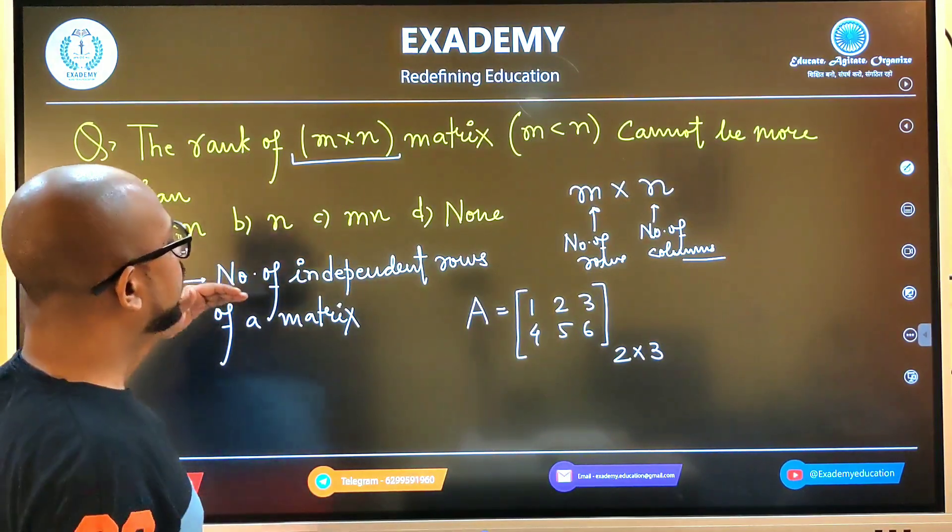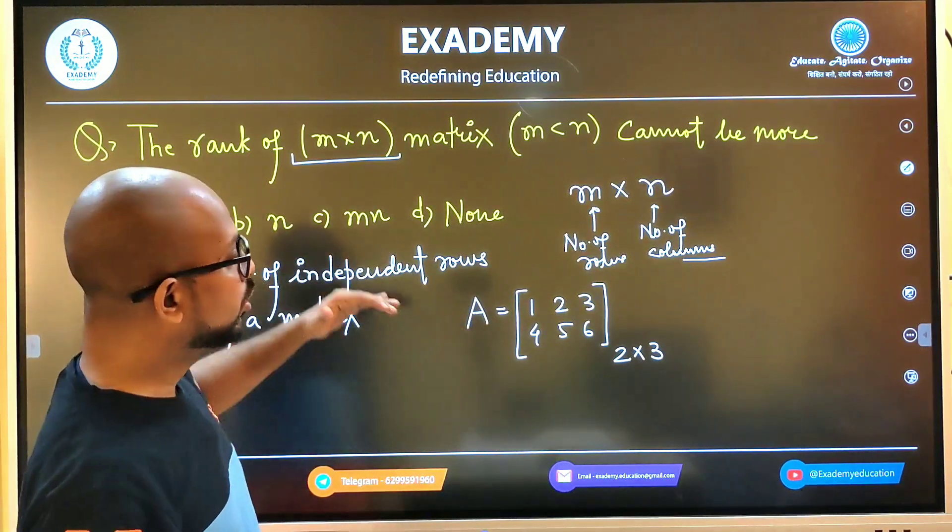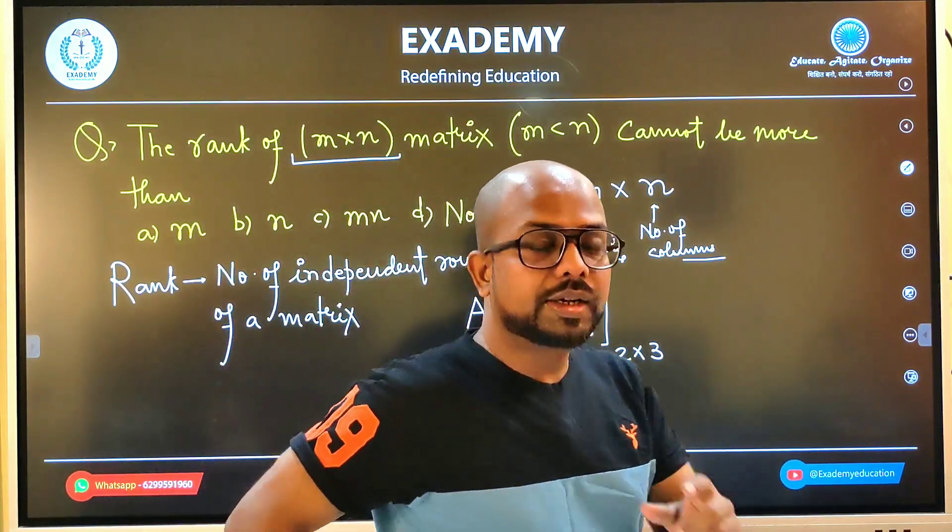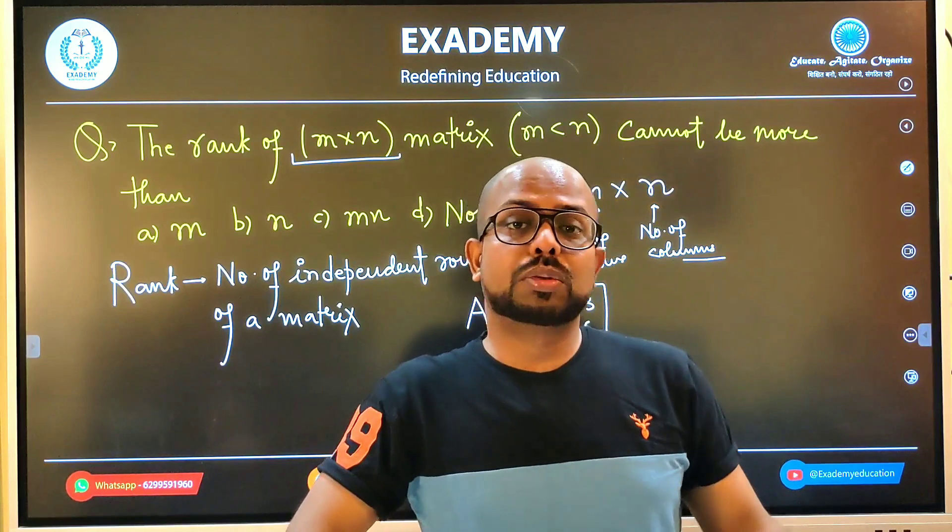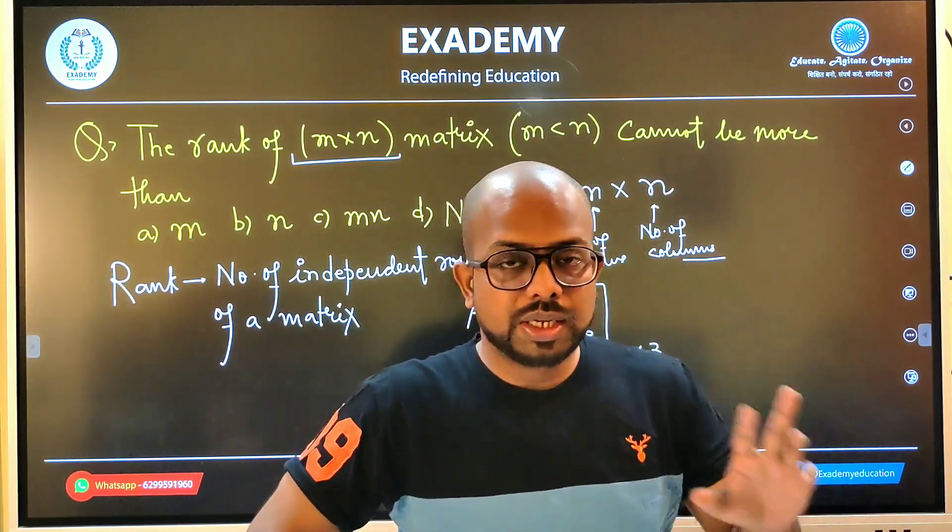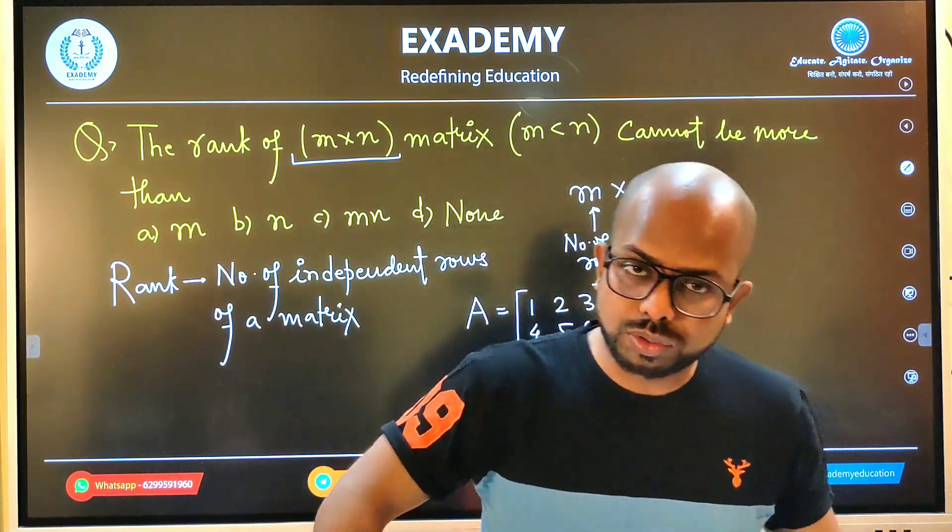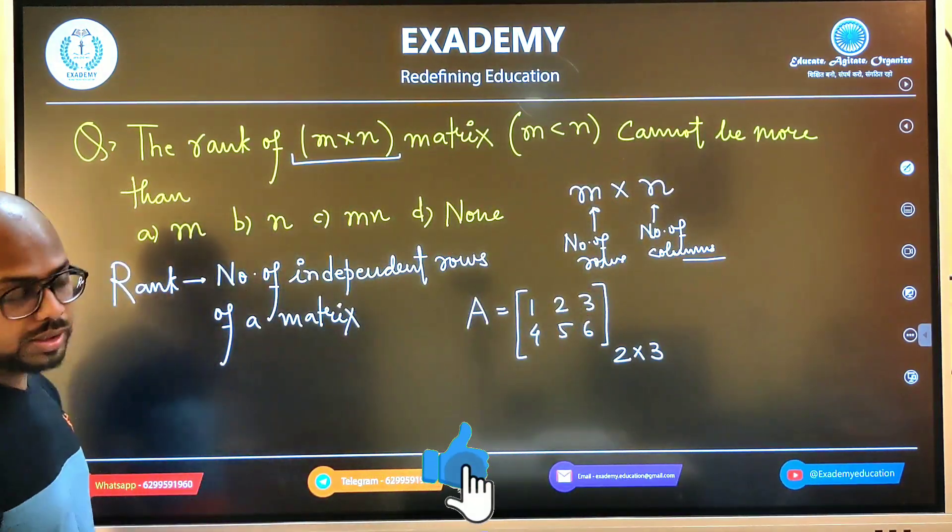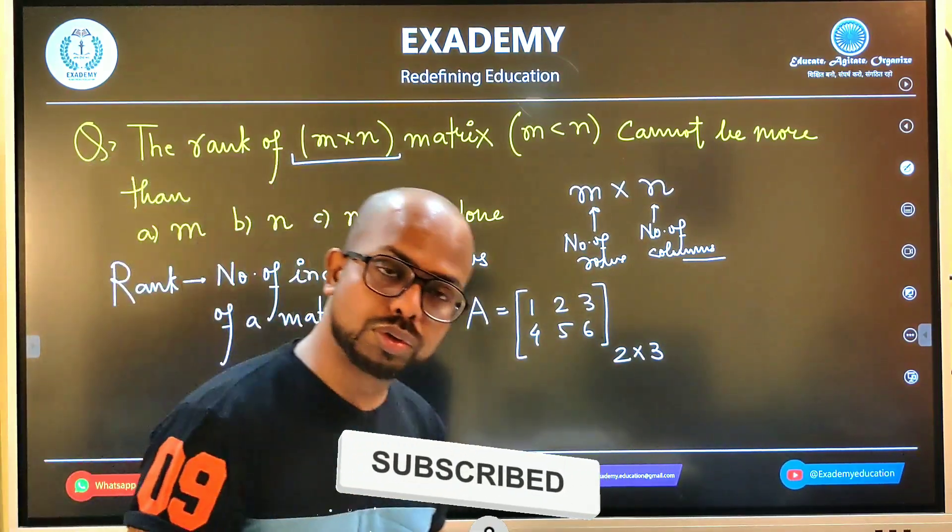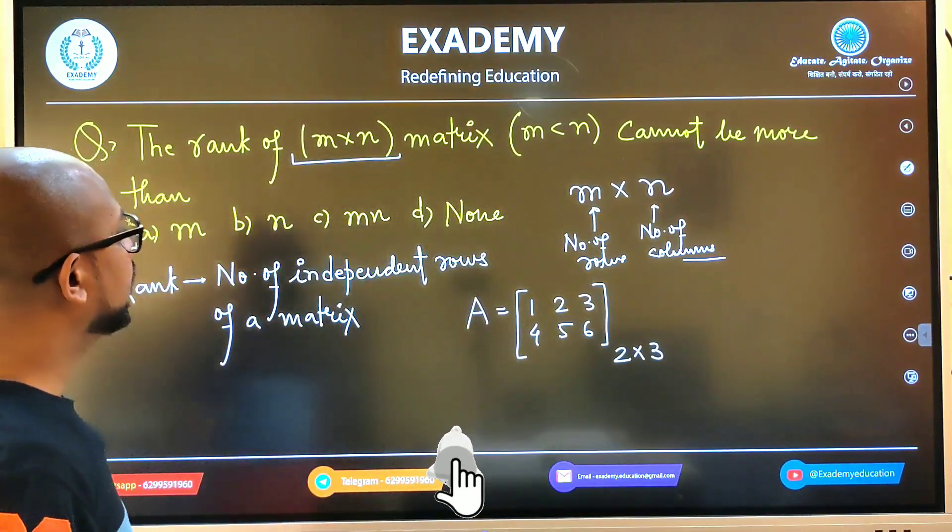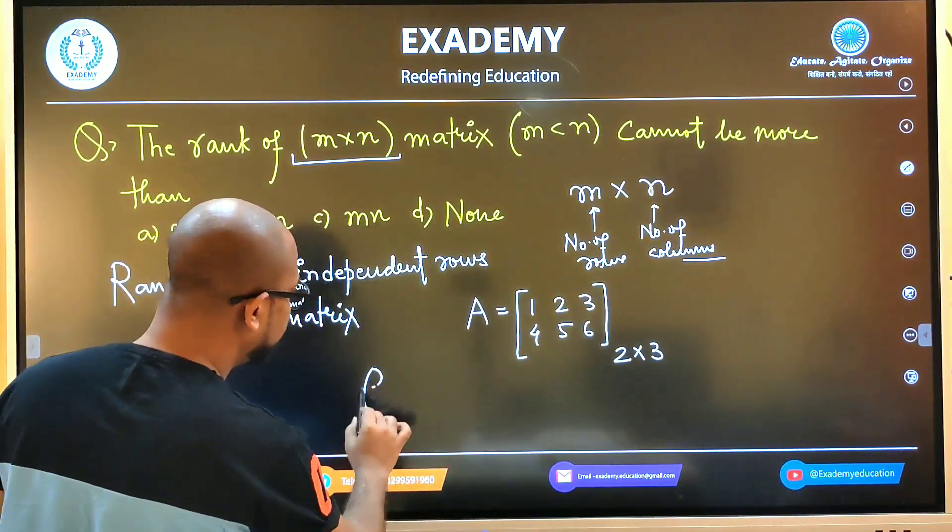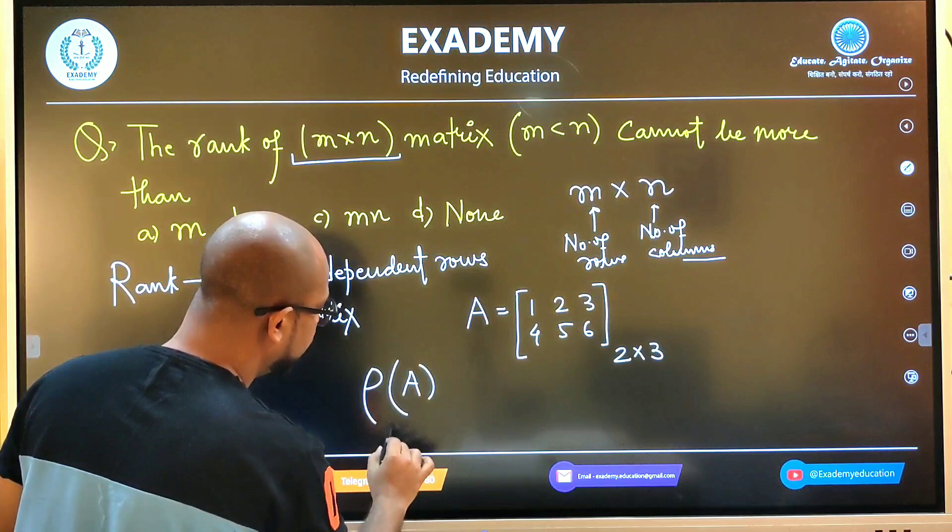The rank is the number of independent rows. If total rows are 2, what is the maximum number of independent rows? It can be 2. Can it be more than 2? No. It could be maximum up to 2 only. So I'm asking, what is the maximum rank?